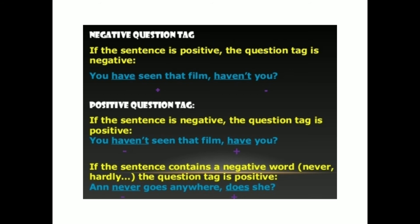Regarding negative question tags: if the sentence is positive, the question tag is negative. For example: 'You have seen that film, haven't you?' For positive question tags: if the sentence is negative, the question tag is positive. For example: 'You haven't seen that film, have you?' If the sentence contains a negative word like never or hardly, the question tag is positive — for example: 'Ann never goes anywhere, does she?'